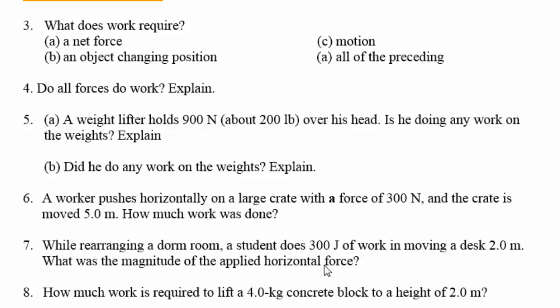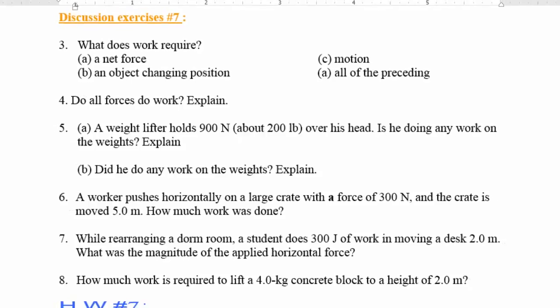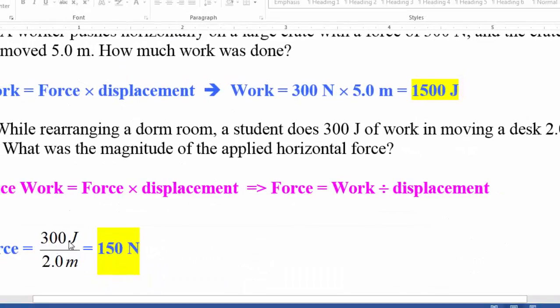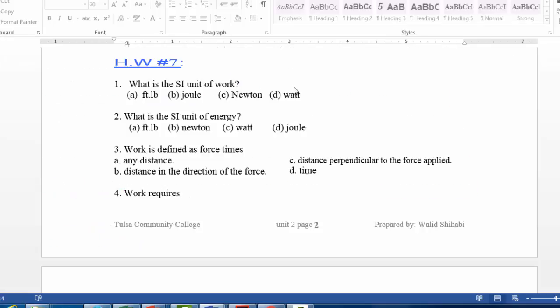Since work equals force times distance, force equals work divided by distance. Dividing 300 joules by 2 meters yields 150 Newtons. Now we are starting the homework — please work the questions yourself first, then continue watching.